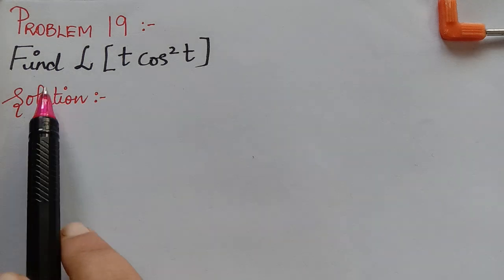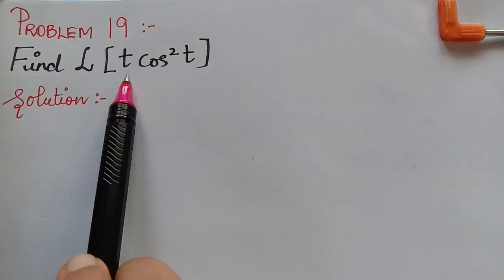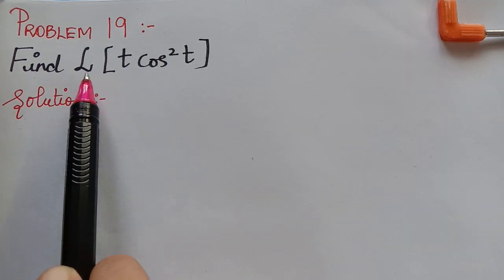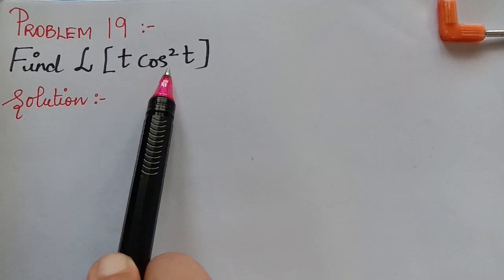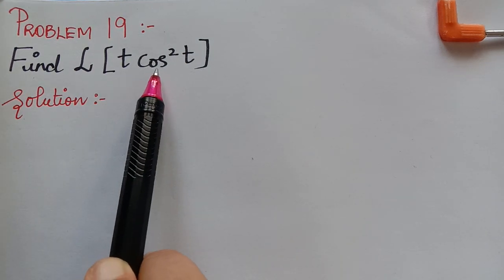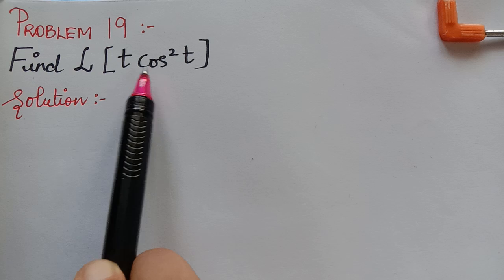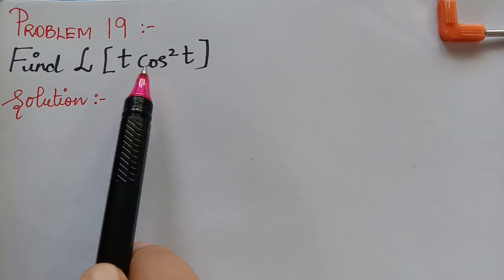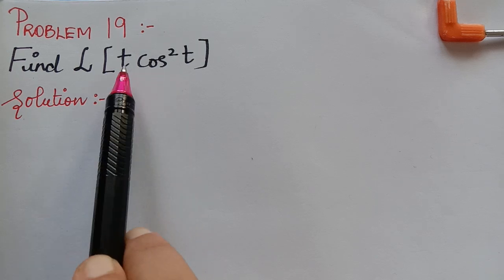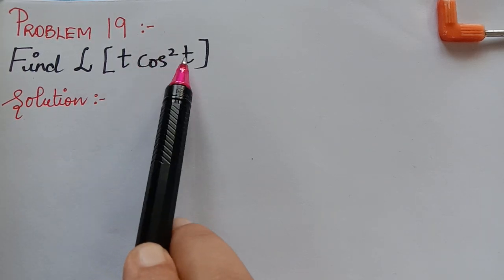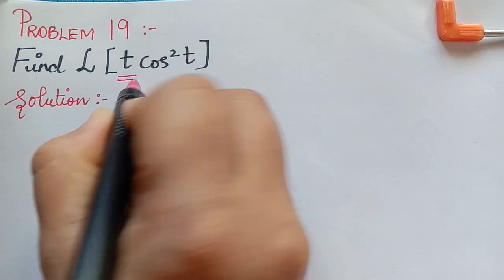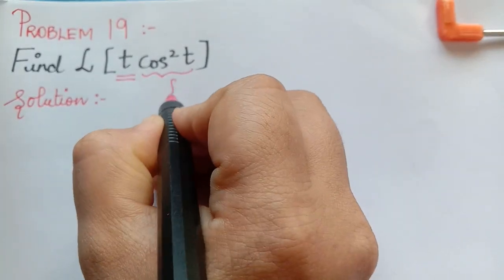The question here is to find the Laplace transform of t·cos²t. We observe that we have to find the Laplace transform of a product of two functions. So whenever we have a product of two functions, we have to apply the theorems under Laplace transform, for which we have to check what kind of function we have. We have t·cos²t, so if we have one of the functions to be t and the other function can be taken as f(t).